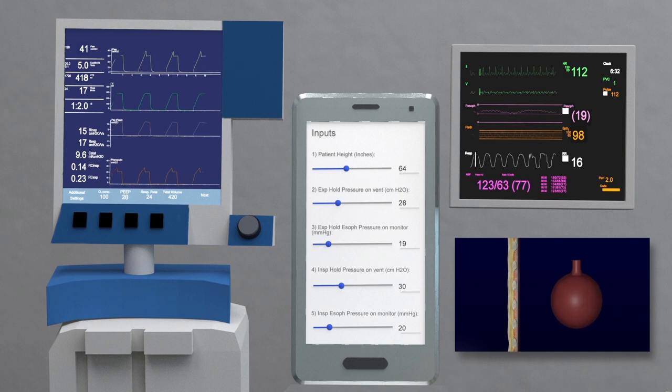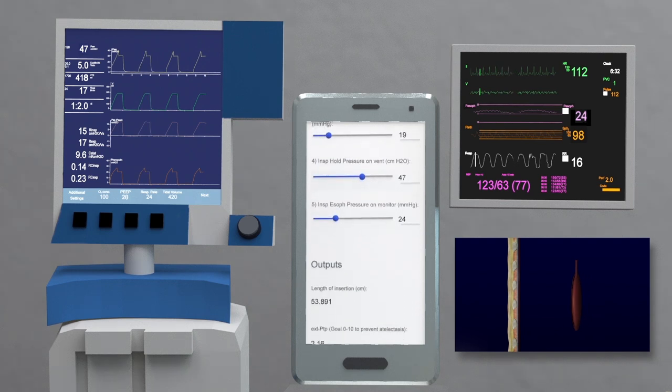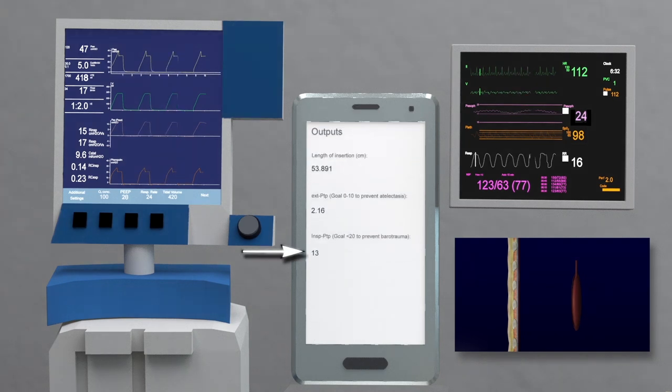Then let's determine if this PEEP is safe by checking the transpulmonary plateau pressure at end inspiration. Press the INSP hold button and set slider 4 to the end inspiratory pressure shown on the ventilator and slider 5 to the esophageal pressure shown on the bedside monitor. Make sure the end inspiratory transpulmonary pressure is less than 20.